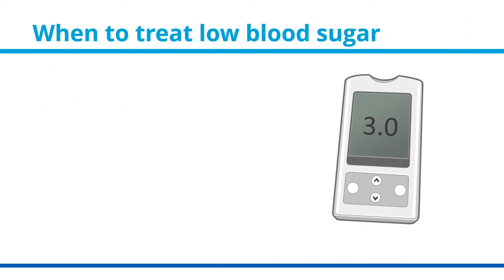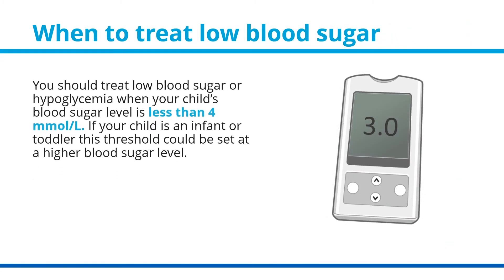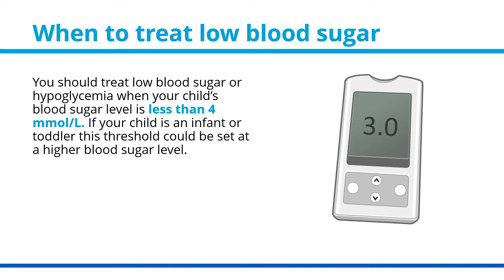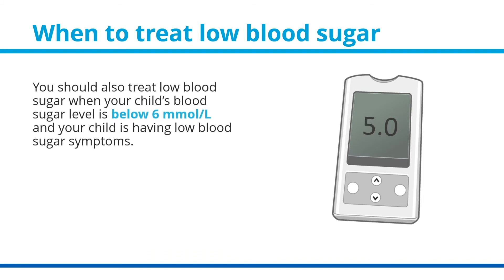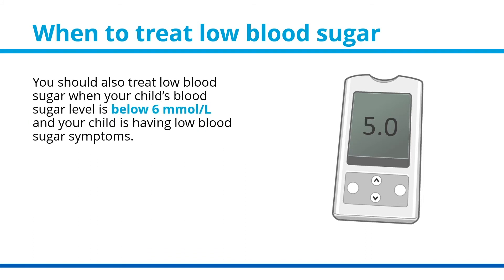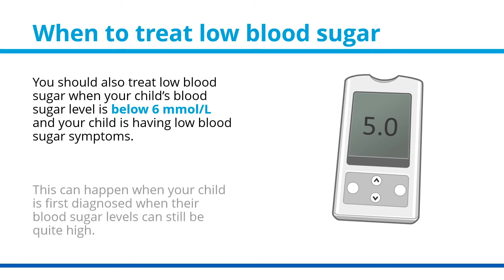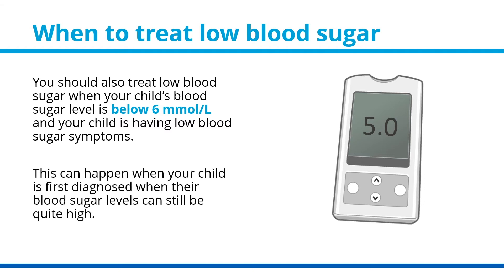When to treat low blood sugar: you should treat hypoglycemia when your child's blood sugar level is less than 4 millimoles per liter. If your child is an infant or toddler, this threshold could be set at a higher blood sugar level. You should also treat low blood sugar when your child's blood sugar level is below 6 millimoles per liter and your child is having low blood sugar symptoms — this can happen when your child is first diagnosed, when blood sugar levels can still be quite high.